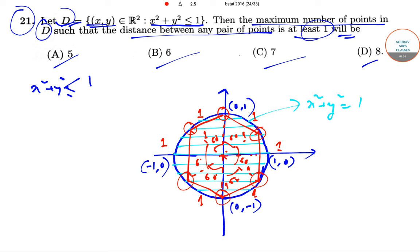So we can see the distance between any two points of all the seven points will always be at least equal to one. And if we take any more point, then that will be less.